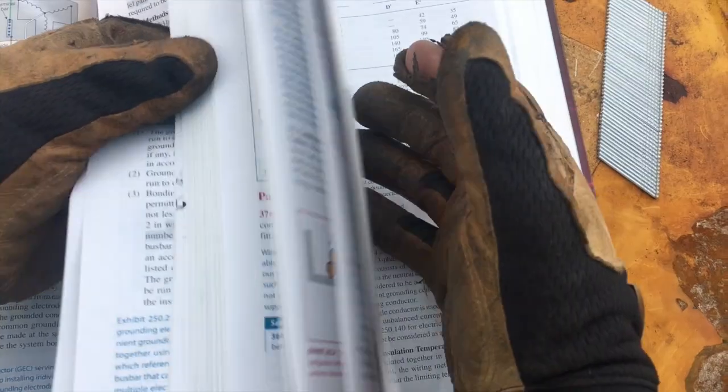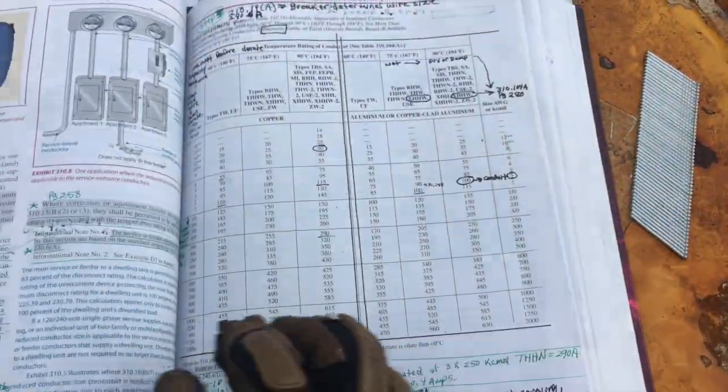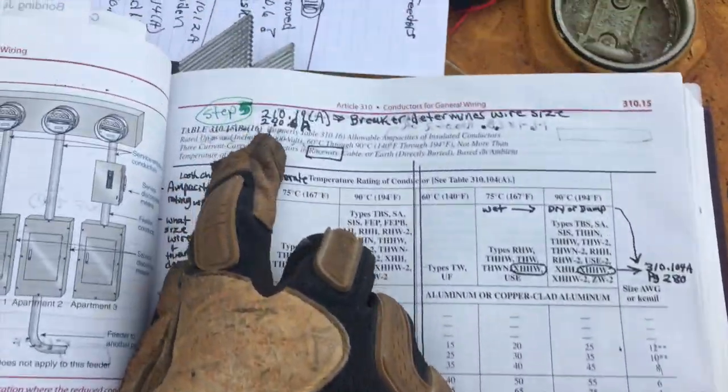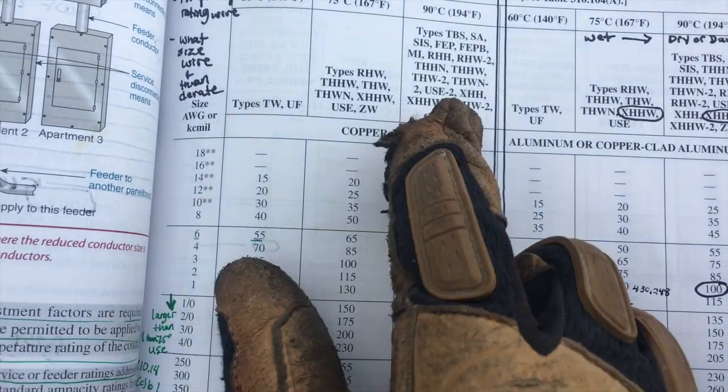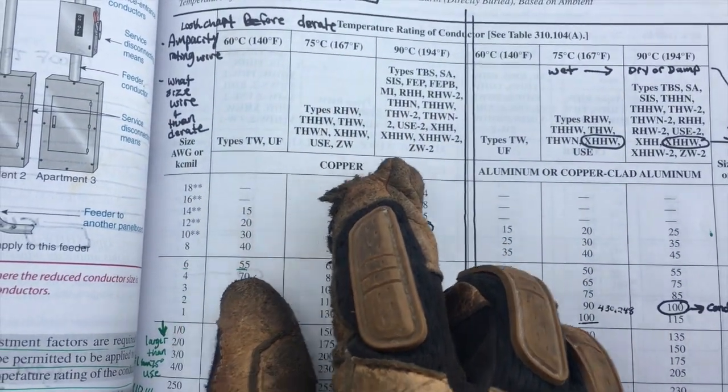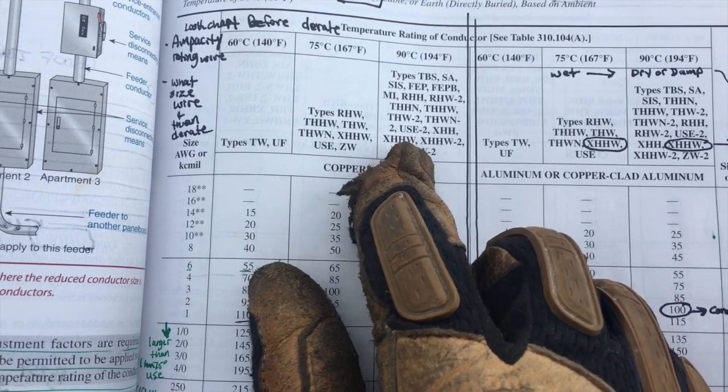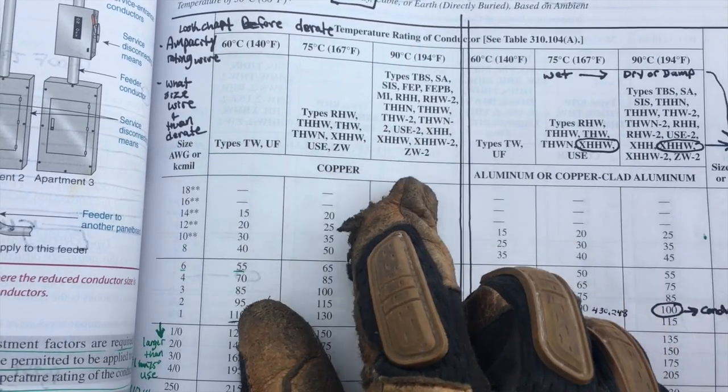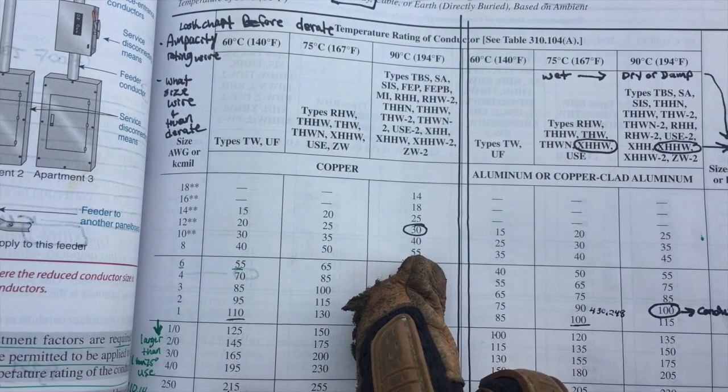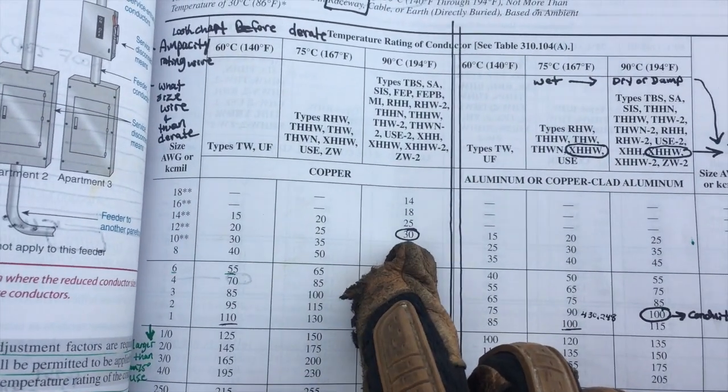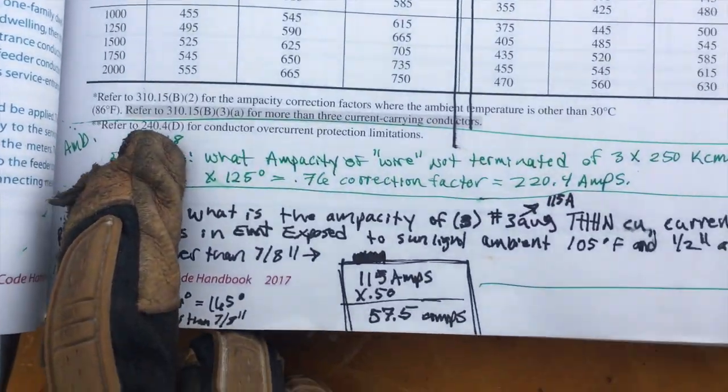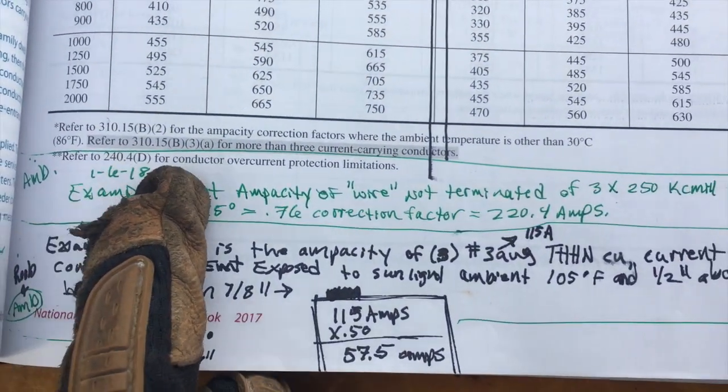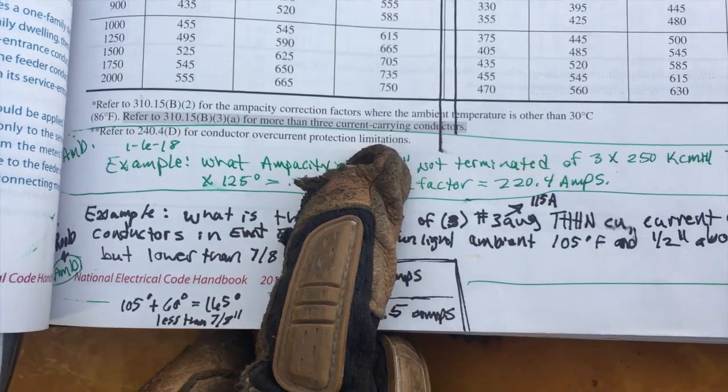You then can figure out 310.15B16, that a number 12 gauge copper THWN-2, that's all I ever buy, rating is 90 degrees Celsius column, and that is good to 30 amps. Pay attention to the asterisk mark which drops you back down here to say pay attention to 240.4D, your conductors over current protection limitations for anything smaller than a 10 gauge.